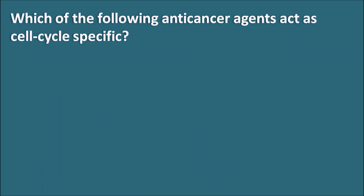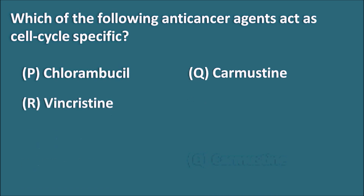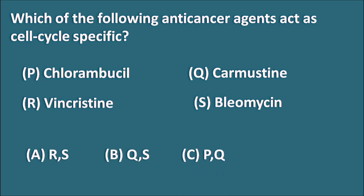Next question: which of the following anti-cancer agents act as cell cycle specific? P — chlorambucil, Q — carmustine, R — vincristine, and S — bleomycin. Options are A — RS, B — QS, C — PQ, and D — PR. The right answer is R and S, that is vincristine and bleomycin.